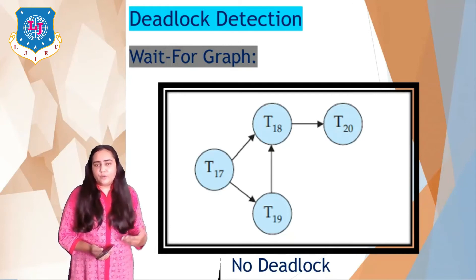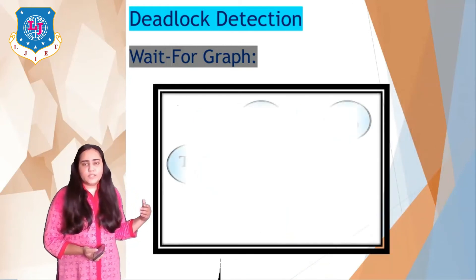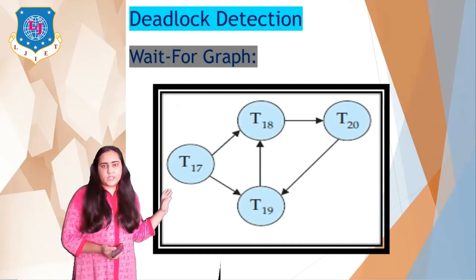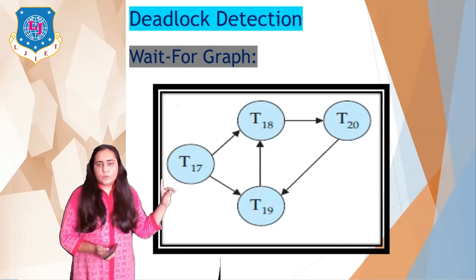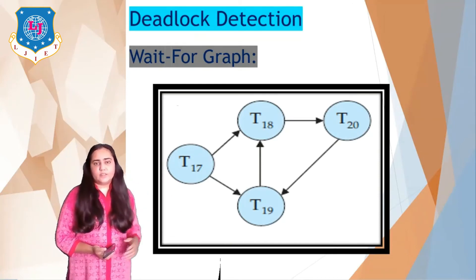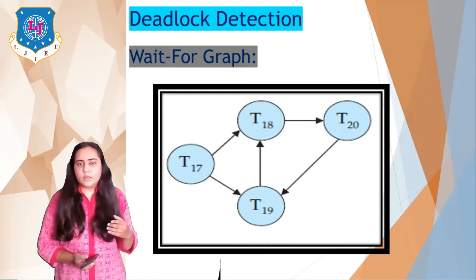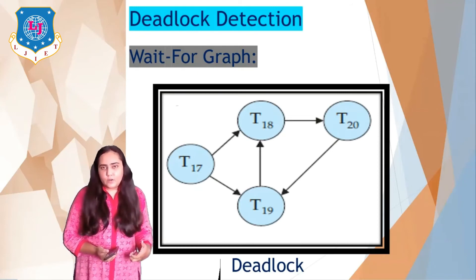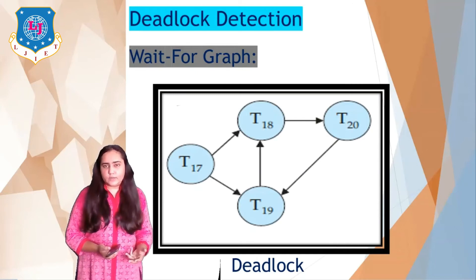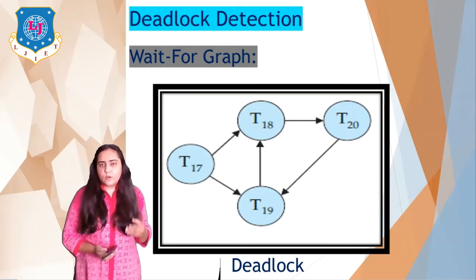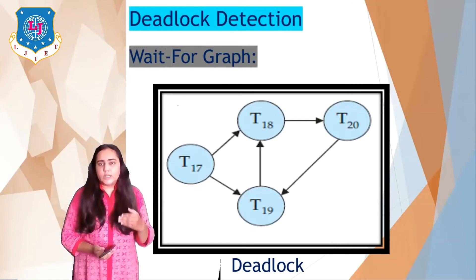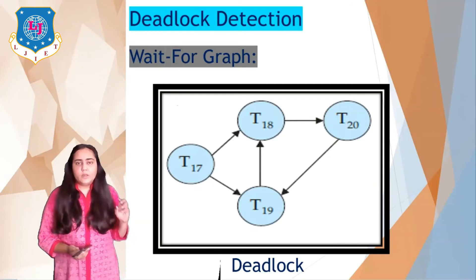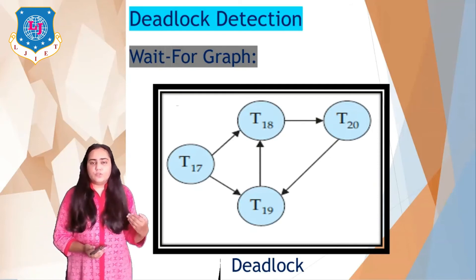Now let us see a wait-for graph with a deadlock. In this graph there is a deadlock between T18, T20, and T19 — they are forming a cycle. So this graph has a deadlock. But not all four transactions are deadlocked; only three are deadlocked because the cycle exists only between T18, T19, and T20. Once we have detected which transactions are causing the deadlock, we then need to figure out how to solve it.